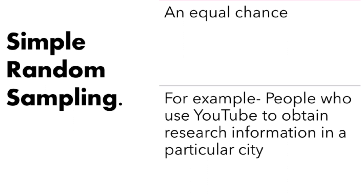You will then go ahead and create a list of all the people who use YouTube as a research resource. After that, you can assign random numbers to each of those people. You can use a random number generator — there are software tools these days that can help generate numbers to assign to each participant.